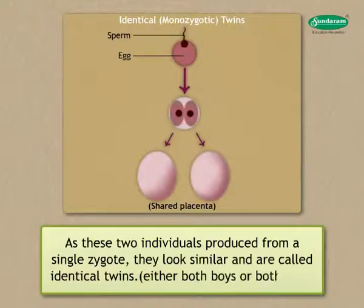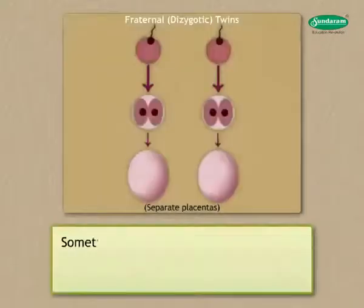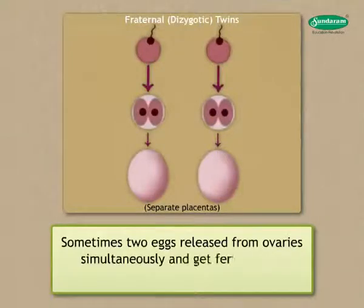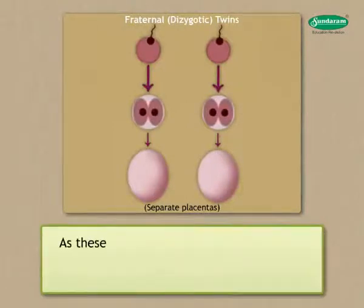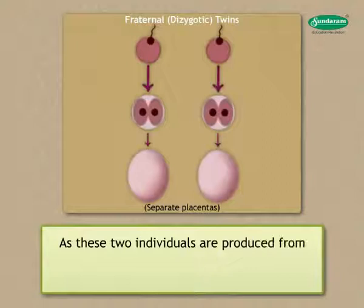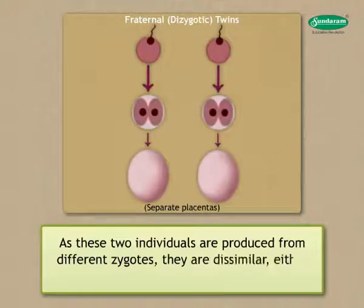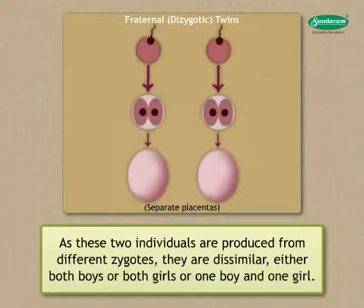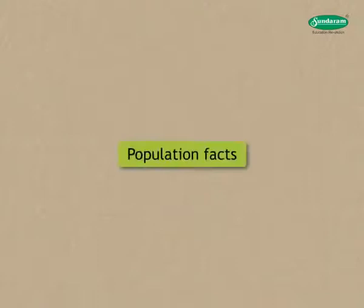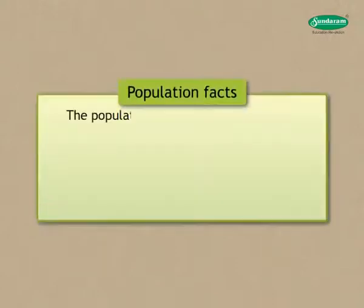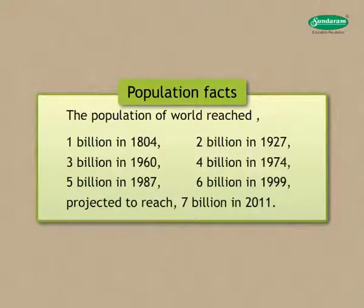Sometimes two eggs are released from the ovaries simultaneously and get fertilized, producing two individuals. Since these two individuals are produced from different zygotes, they are dissimilar and can be either both boys, both girls, or one boy and one girl. These are called fraternal twins.